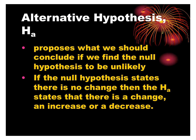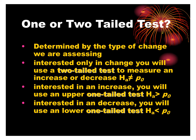Then we have the alternative hypothesis, and that's what we should conclude if we find the null hypothesis to be unlikely. If the null hypothesis states there's no change, then the alternative states that there is a change — an increase or a decrease. Whether we use a one- or two-tailed test is determined by the type of change we're assessing. If we're interested in just whether it has changed — whether increased or decreased — we do a two-tailed test, so our alternative would be that p does not equal 0.5.